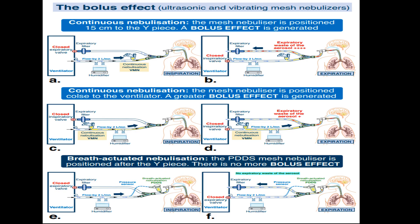Black arrows indicate inspiratory flow coming from the ventilator. Red arrows indicate expiratory flow coming from the respiratory system. Blue arrows indicate bias flow.